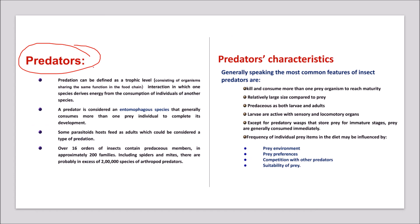A predator is defined at the trophic level as a species deriving energy from the consumption of individuals of another species. Predators are entomophagous species that generally consume more than one prey individual to complete their development. They have prey preferences, prey-specific environments, and suitability requirements relative to different environmental parameters.